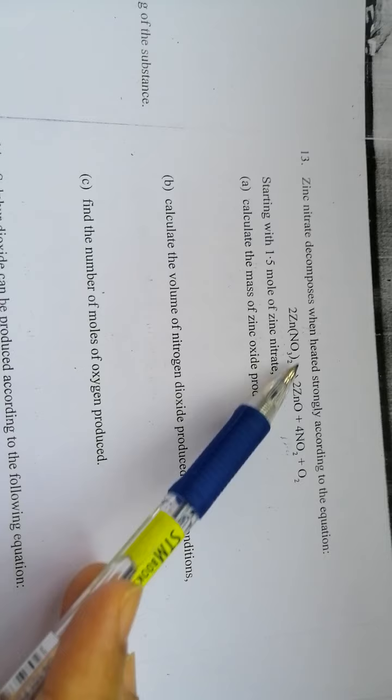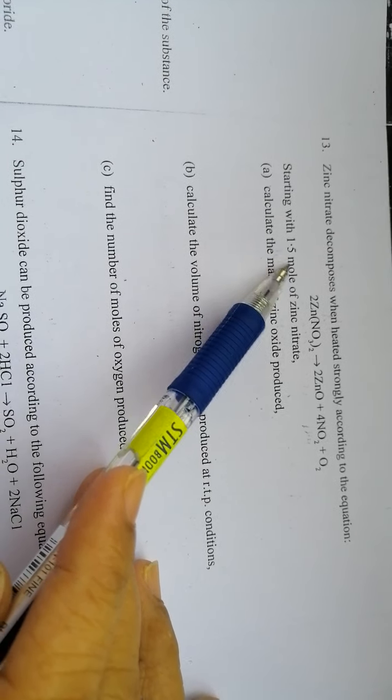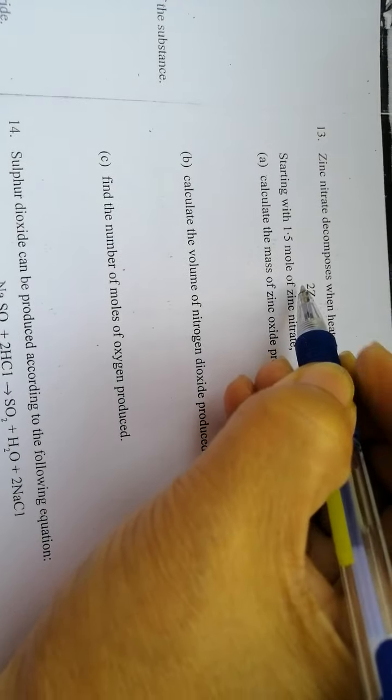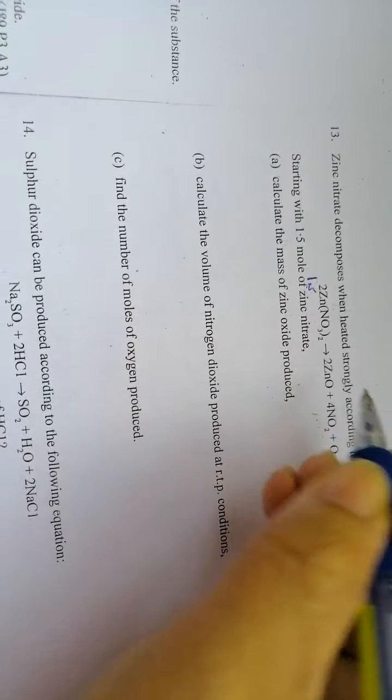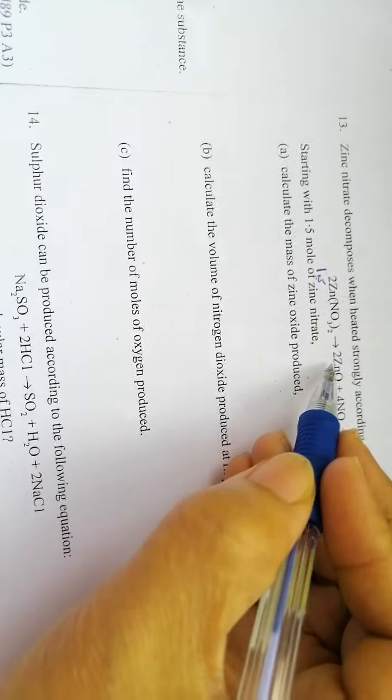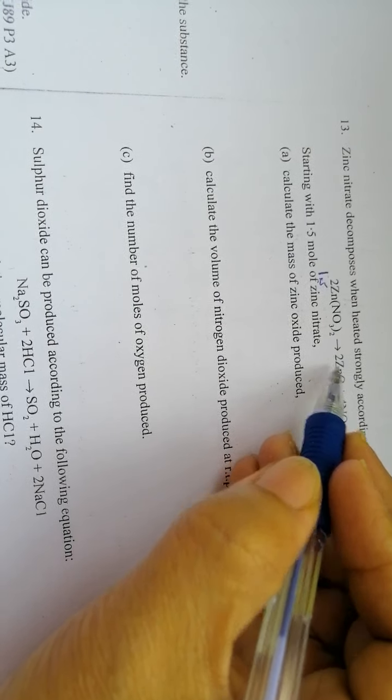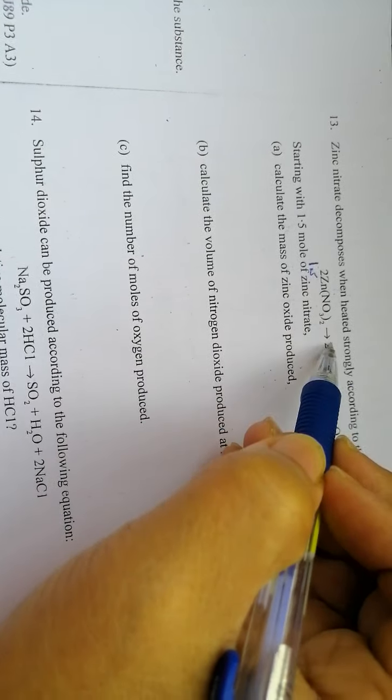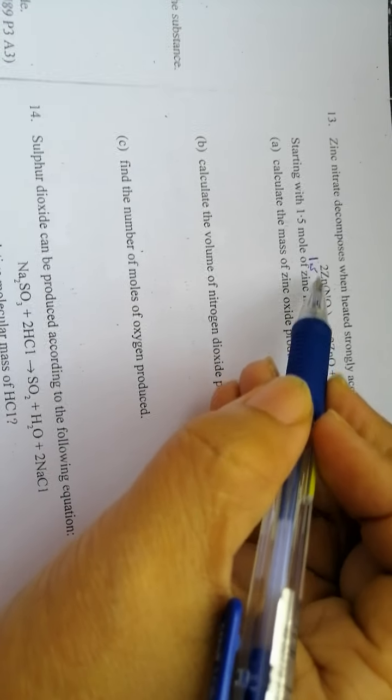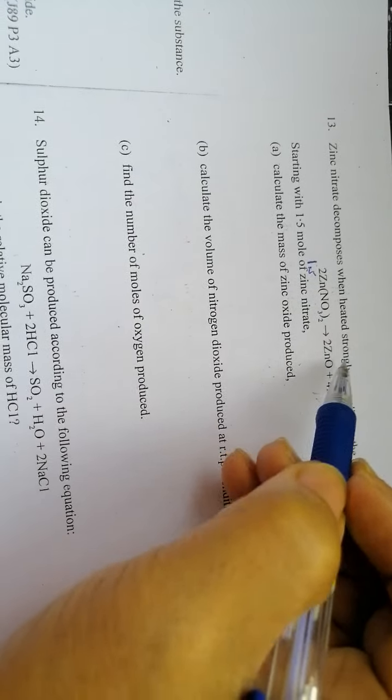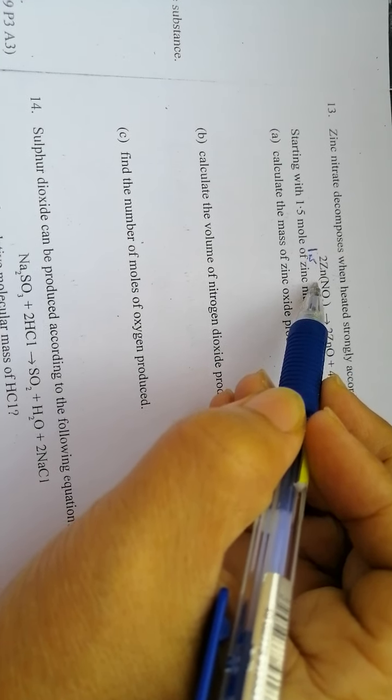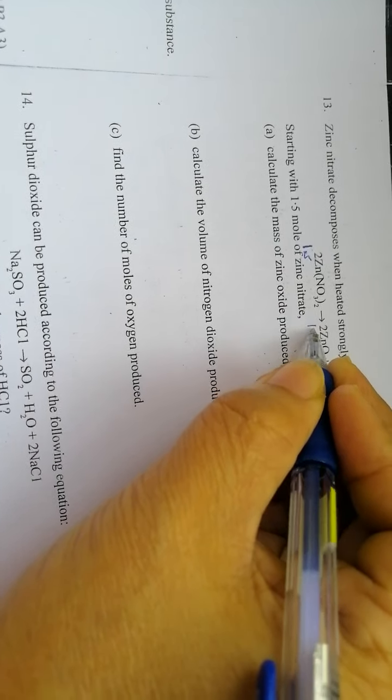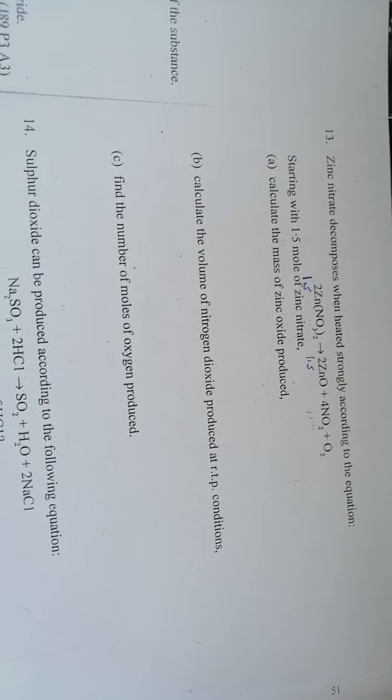So 2 is to 2. If we're going to use 1.5 moles of zinc nitrate instead of 2, how many moles will there be for the zinc oxide? Since the ratio is 2 to 2, or 1 to 1 if you simplify, then 1.5 moles of zinc nitrate will produce 1.5 moles of zinc oxide.